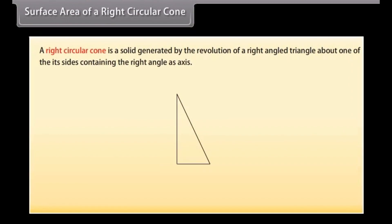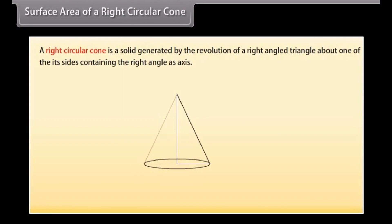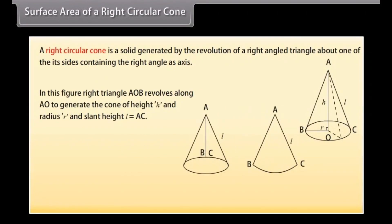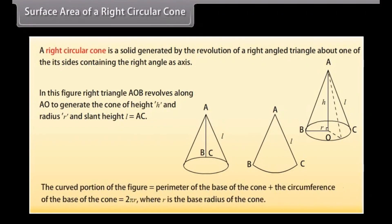Surface area of a right circular cone. A right circular cone is a solid generated by the revolution of a right-angled triangle about one of its sides containing the right angle as an axis. Right triangle AOB revolves along AO to generate a cone of height h, radius r, and slant height L = AC. To find the total surface area, we cut it along its slant height and spread it into a sector ABC. The curved portion equals the perimeter of the base of the cone, and the circumference of the base is 2πr, where r is the base radius.